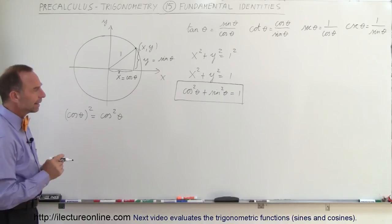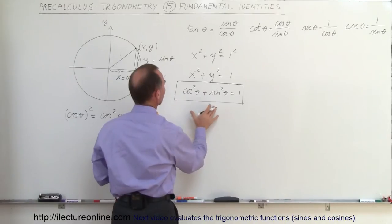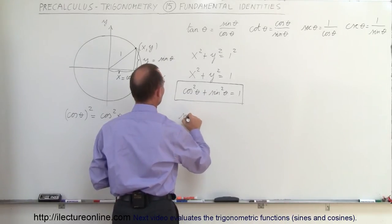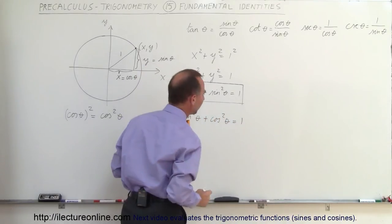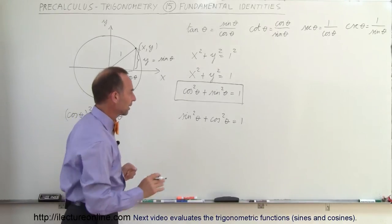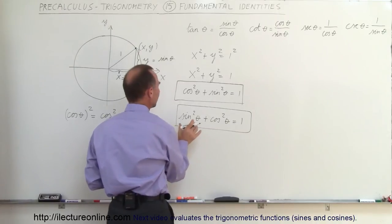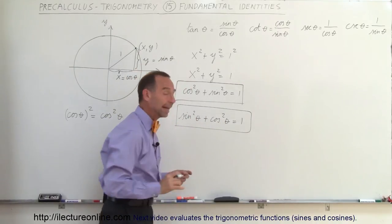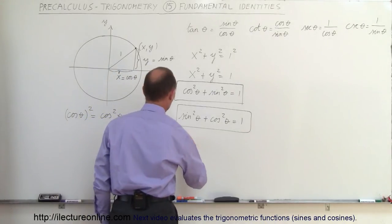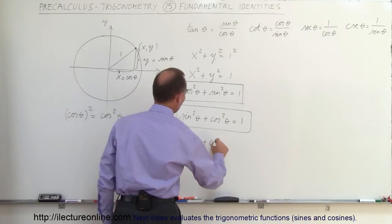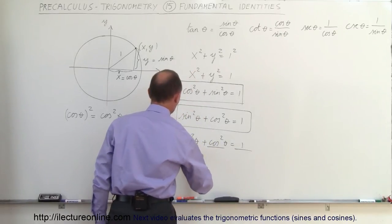Now if we take that identity and work with it a little more, let's reverse the sine and the cosine and write it as sine squared theta plus cosine squared theta equals 1, which is the more common form. If we now divide both sides of the equation by sine squared theta, let's see what we get.